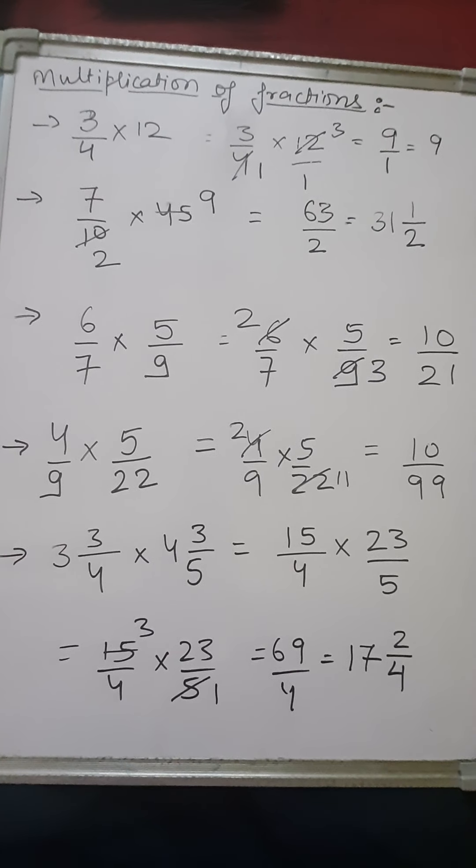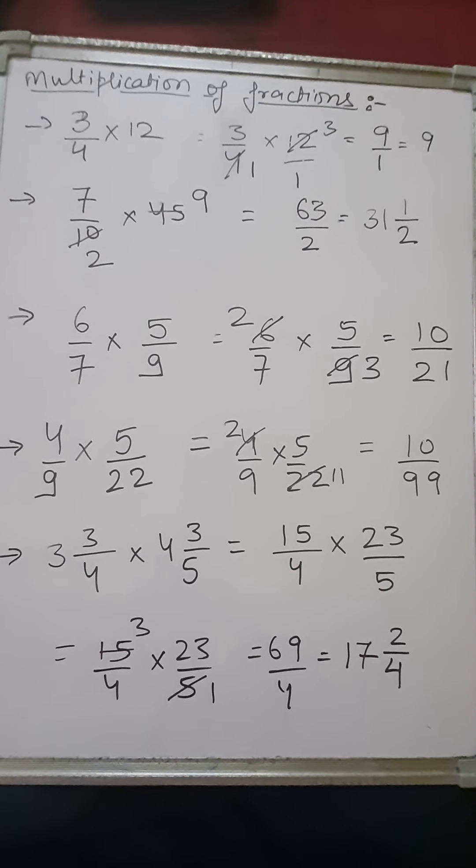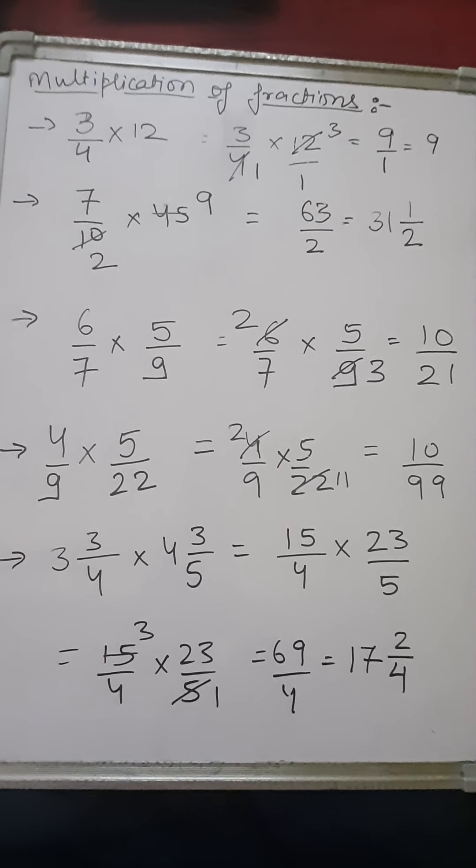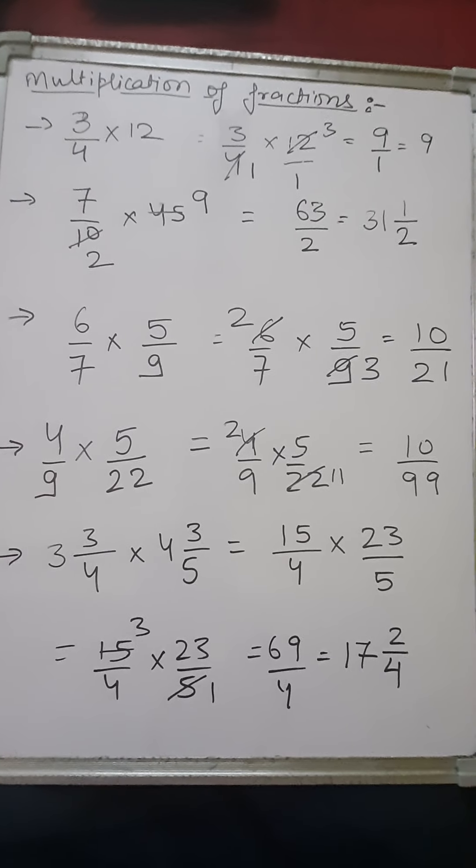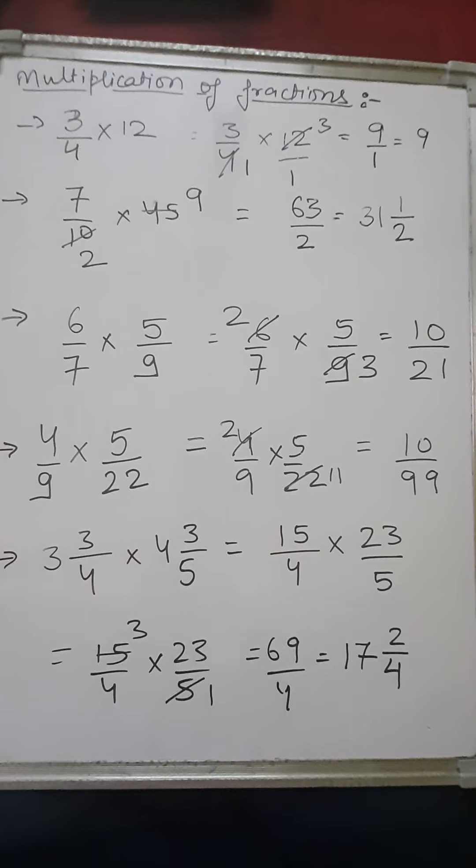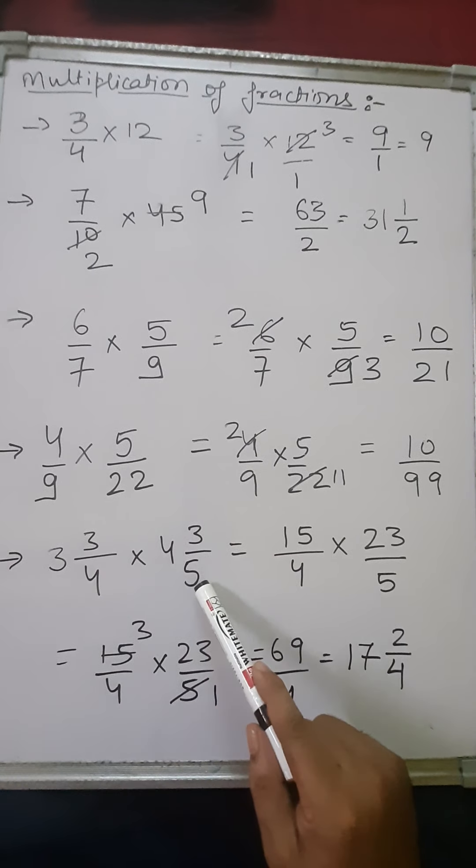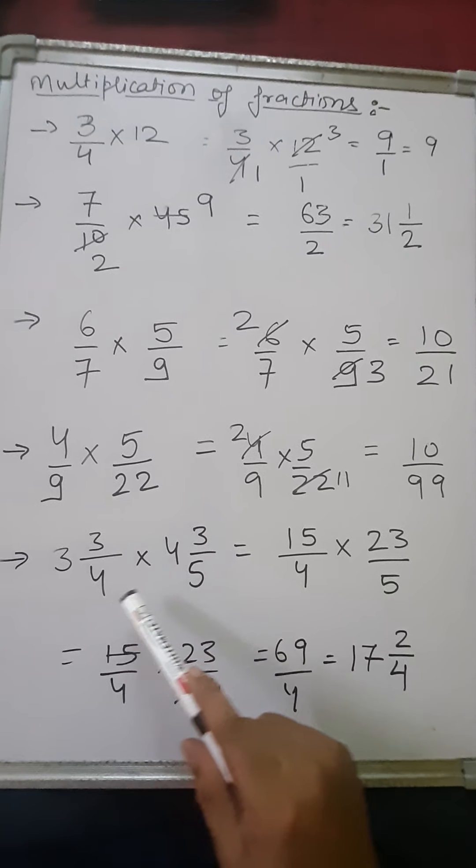Let's see another sum, children. In this question, we have to multiply two mixed fractions. These fractions are 3 wholes 3 by 4 and 4 wholes 3 by 5.